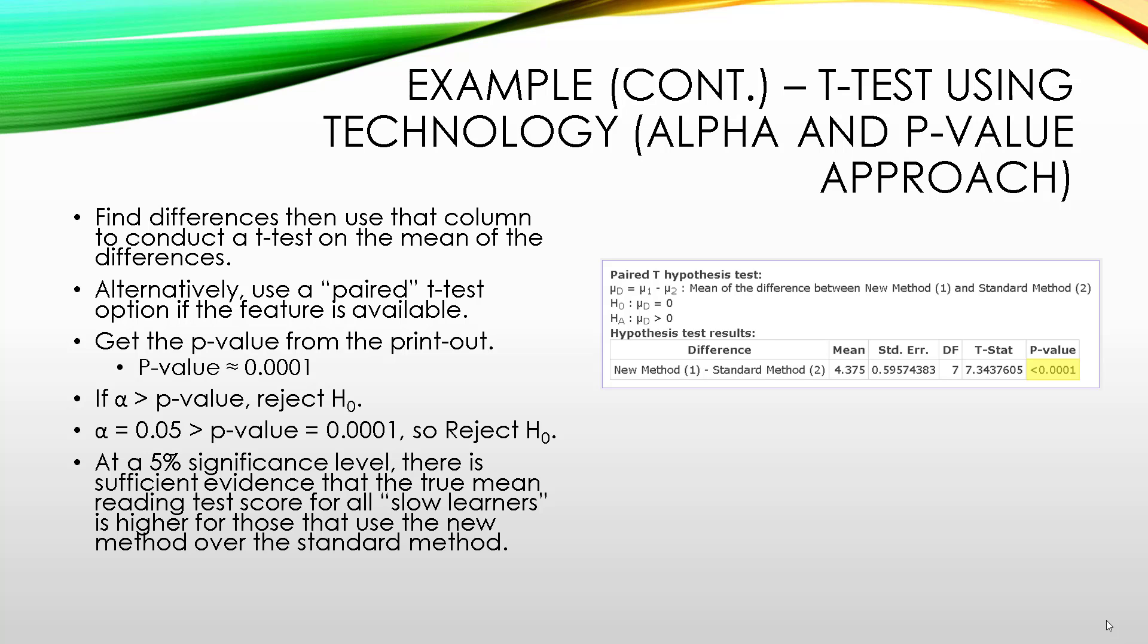So, at the 5% significance level, there is sufficient evidence that the true mean reading test score for all slow learners is higher for those that use the new method over the standard method. So, this is very promising. If you were implementing this new method, there's evidence that it is better than the older method.